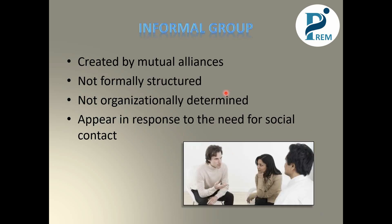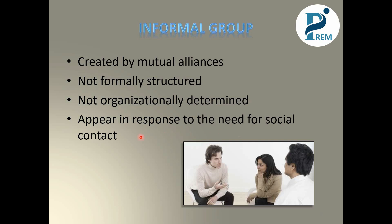An Informal Group is created by mutual alliance. There is no formal organization, company structure, position, or designation. It is not organizationally determined. These groups appear in response to the need for social contact — if people want social contact, they meet; otherwise, they don't.